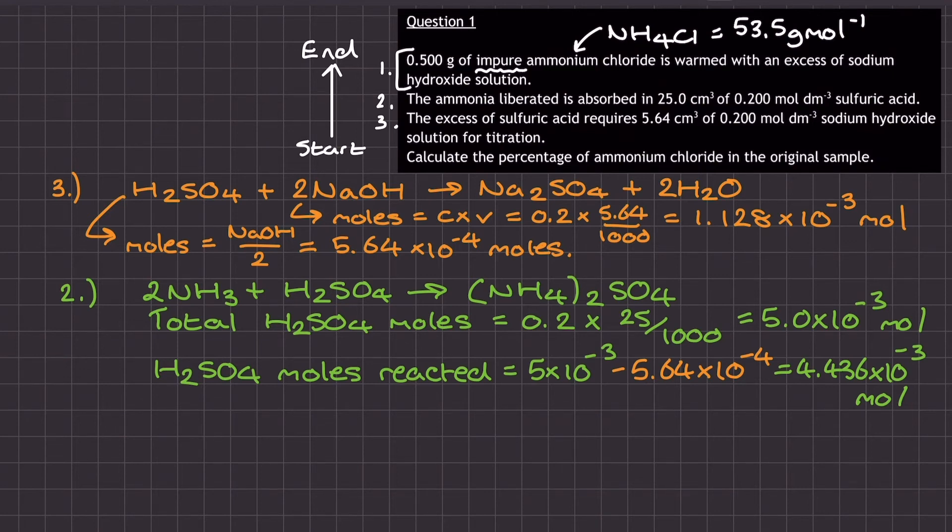Now using the balanced reaction equation, I can go from the H2SO4 across to the ammonia, so I can use this mole value for the sulfuric acid to determine the number of moles of ammonia that reacted with it. Since the ratio is 2 to 1, so that's the 2 NH3 to the 1 H2SO4, what I'm going to do now is double my H2SO4 mole value, and that's going to tell me the number of moles of ammonia that I was using in stage 2.